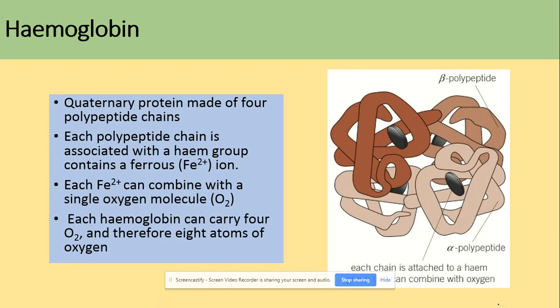We will now look at hemoglobin. It's a quaternary protein because it's made of four polypeptide chains. Each of those is associated with a heme group, and each iron ion is combined with a single oxygen molecule, so they can carry in total four oxygen molecules.